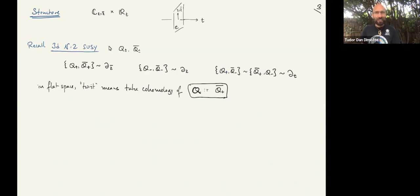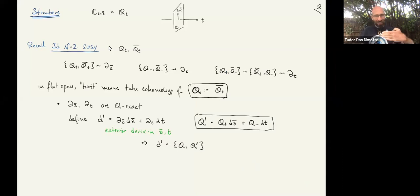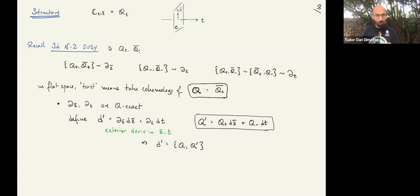I'll make a choice: I'll take Q-plus-bar as the supercharge whose cohomology I'll take. Once I do that, anti-holomorphic derivatives and the time direction — by t I just mean the real direction transverse to this complex plane — translations in that real direction and z-bar translations become exact. There's a convenient way to pack that: if we consider an exterior derivative in the z-bar and t directions, we can write this exterior derivative as a commutator of our supercharge Q and some Q-prime formed from two of the other supercharges with formal differentials attached.